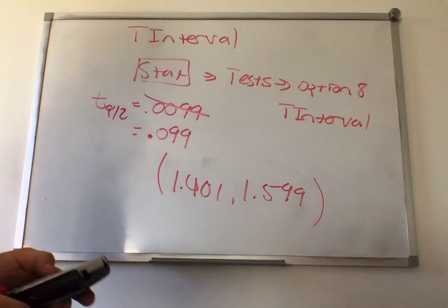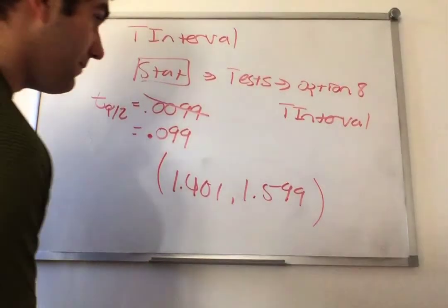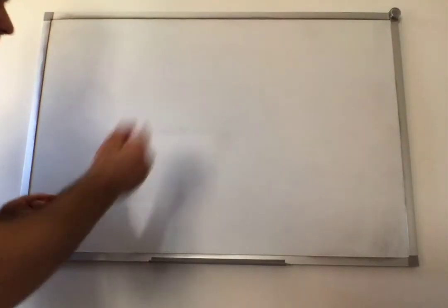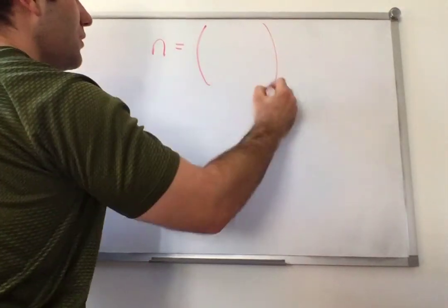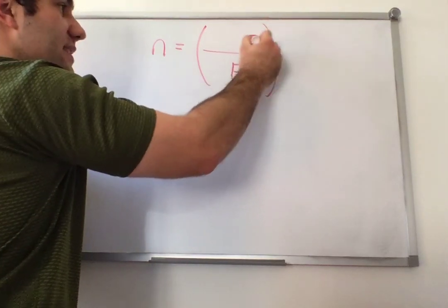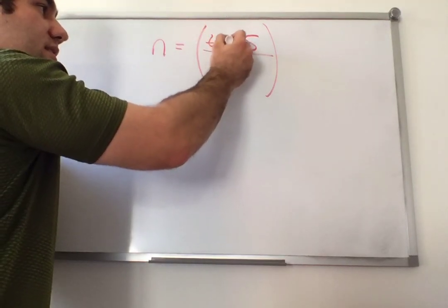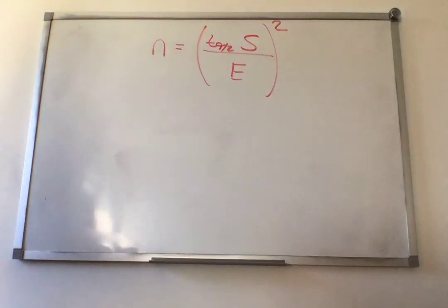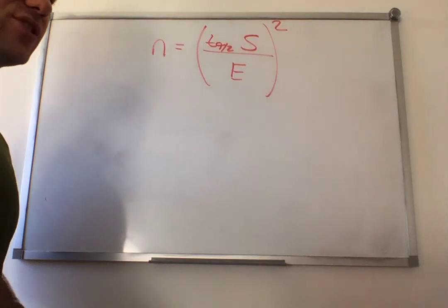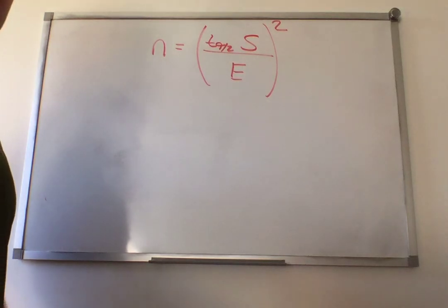You can also find the sample size in this context. I couldn't find a good problem in the book for this section, but the formula remains the same: n equals — with E in the denominator — instead of the population standard deviation, it's the sample standard deviation; instead of the z critical number, it's the t critical number, and you square it. The only difference in this section is we don't know the population standard deviation, so we use the t-distribution as opposed to the z-distribution.